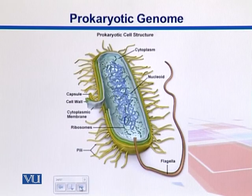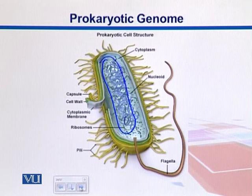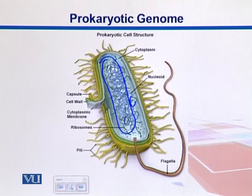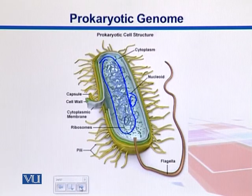In this diagram we see a prokaryotic cell, which is a bacterium. We have the genome — the DNA — in the shape of a large chromosome in the middle, and ribosomes, small structures involved in protein synthesis, which is needed by every organism. The cell is relatively simple and has walls with different layers.